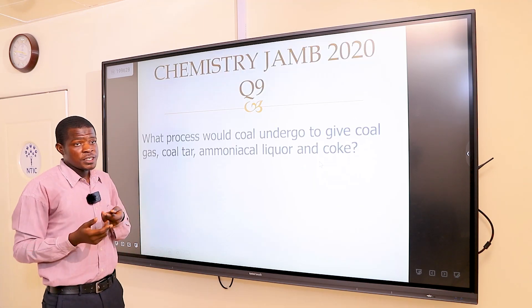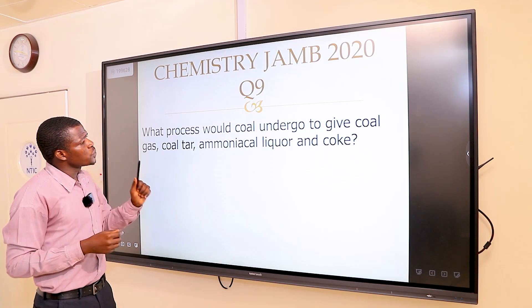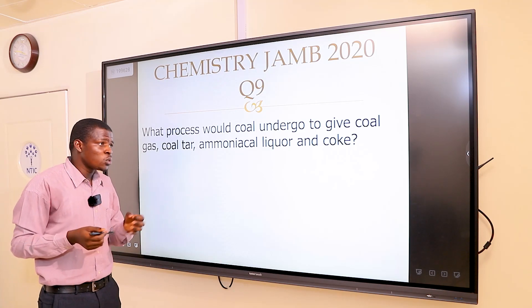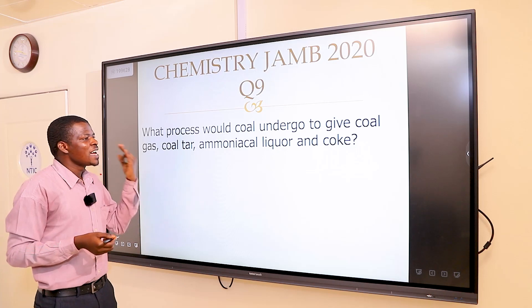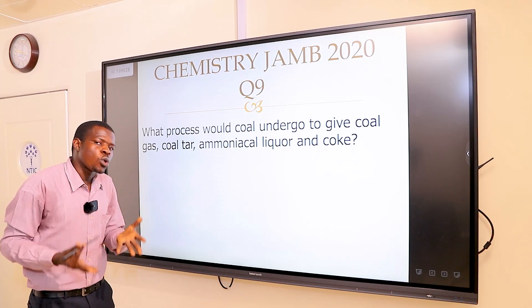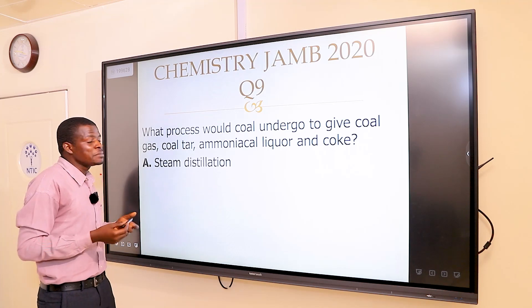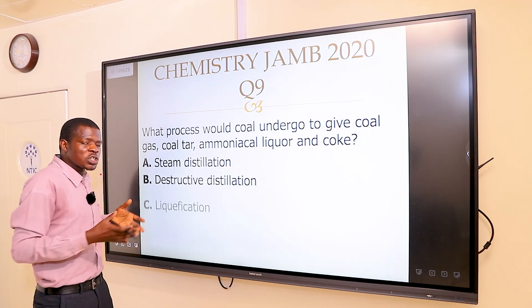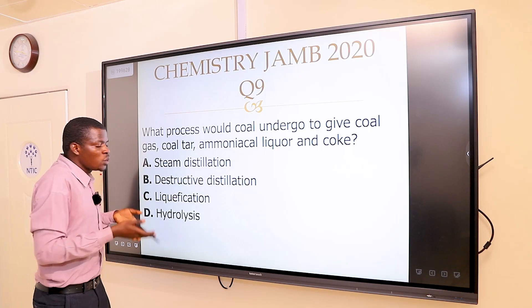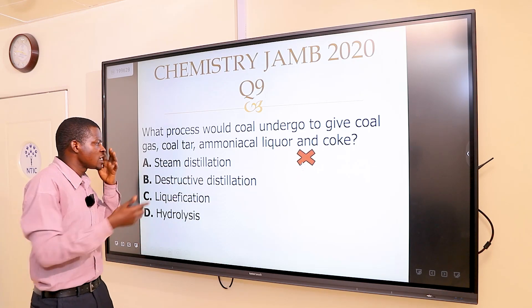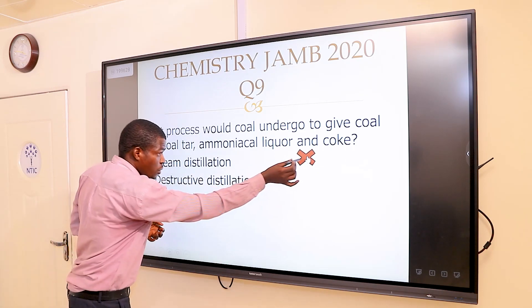The next question says: what process would coal undergo to give coal gas, coal tar, ammoniacal liquor, and coke? The options were: A, steam distillation; B, destructive distillation; C, liquefaction; and D, hydrolysis. Steam distillation is wrong.